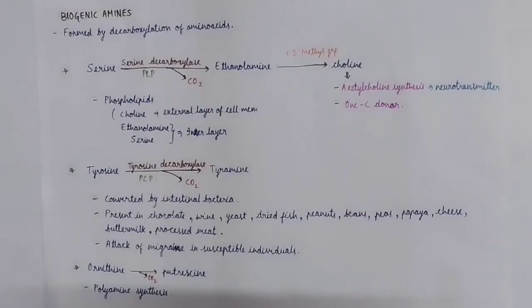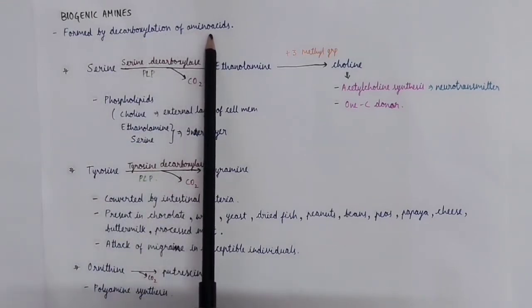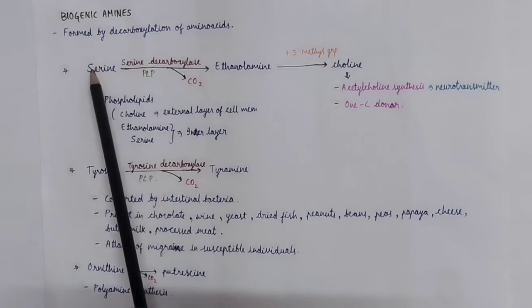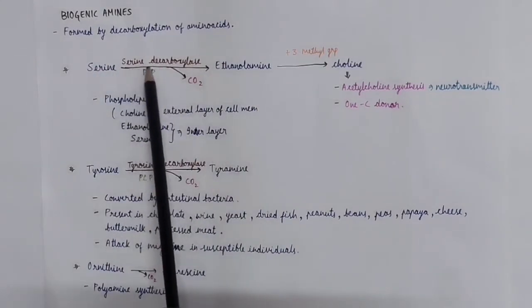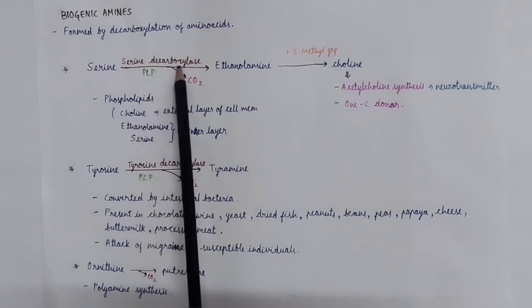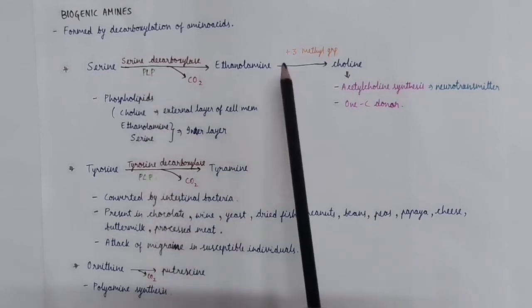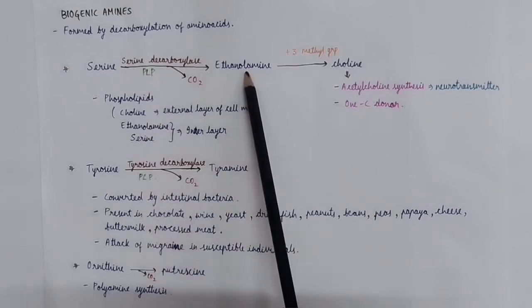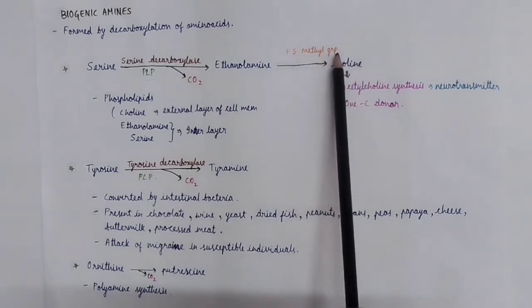Coming to biogenic amines, these are formed by decarboxylation of amino acids. For example, serine is converted to ethanolamine by decarboxylation reaction catalyzed by serine decarboxylase, which is dependent on PLP. This ethanolamine is further converted to choline by addition of three methyl groups.